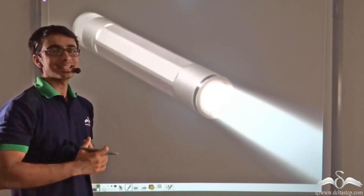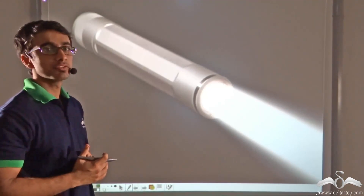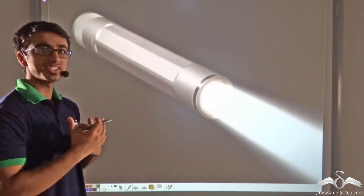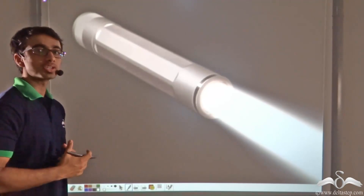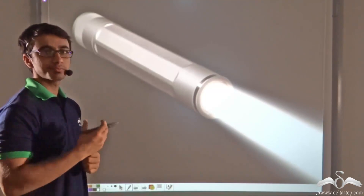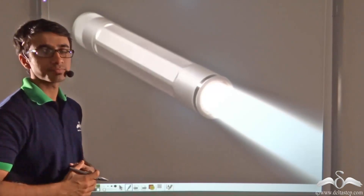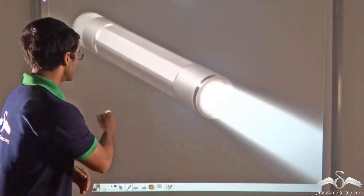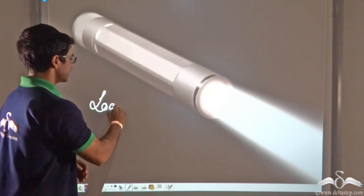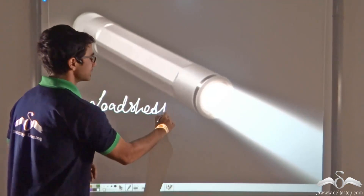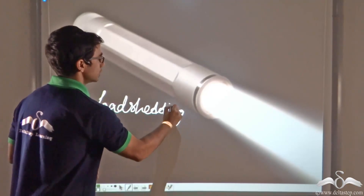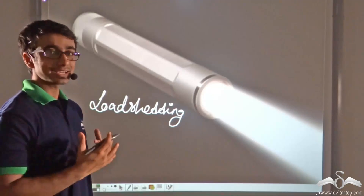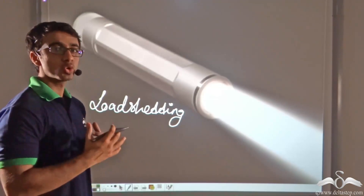You know that electricity reaches your homes from the station through wires. Due to this electricity, you are able to run several appliances like tube lights, bulbs, TVs, etc. Now often what happens is this electricity fails — that is, load shedding takes place, which is also known as a power cut. Due to this load shedding or power cut, you don't get electricity at your homes and no appliance works.